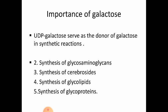UDP galactose serves as a donor for lactose in synthetic reactions, and also in the synthesis of glycosaminoglycans, cerebrosides, glycolipids, and glycoproteins. All these syntheses require UDP galactose, which is why galactose is important in our body.